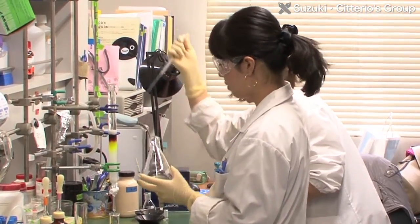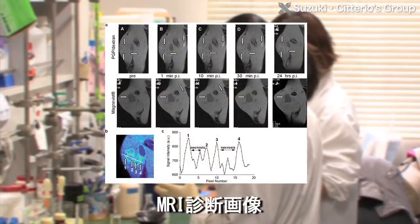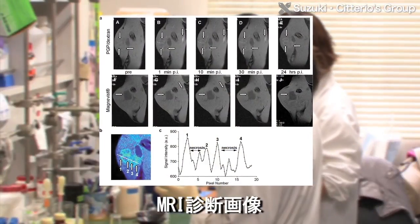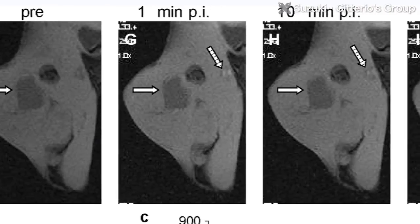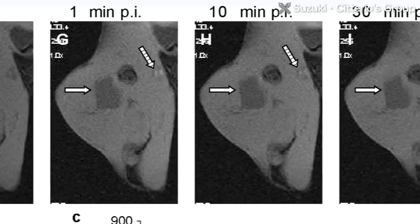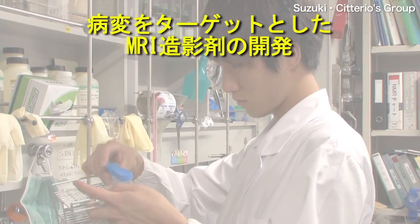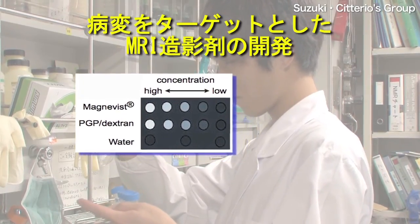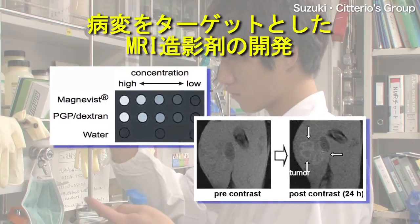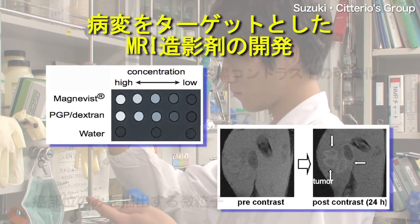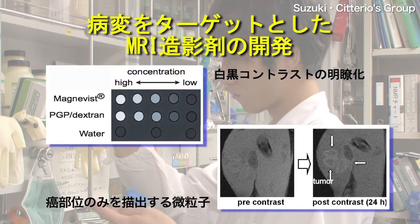In healthcare currently, MRI is the most representative diagnostic method, but it's still difficult to identify first-stage tumors that are less than one millimeter in size. To detect such small tumors, it's necessary to develop contrasting agents that give sharper monochrome contrast than current ones, and also to selectively identify regions where tumors are present.